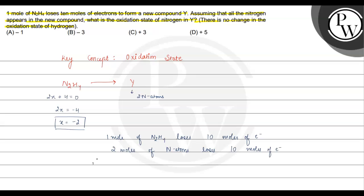So 2 moles of nitrogen lose 10 moles of electrons, meaning each mole of nitrogen loses 5 electrons. We know that nitrogen in N2H4 has oxidation state minus 2.